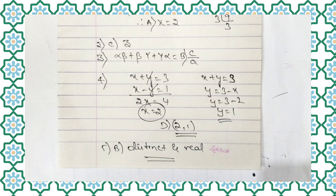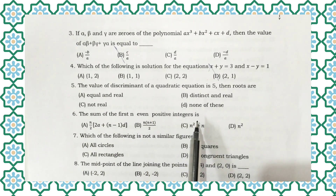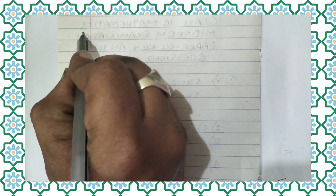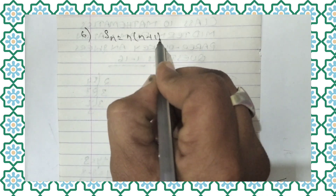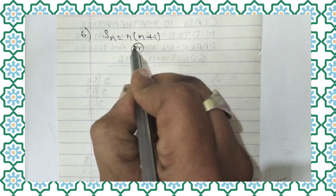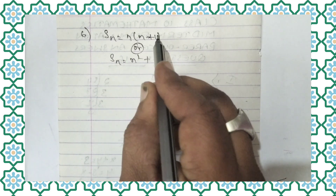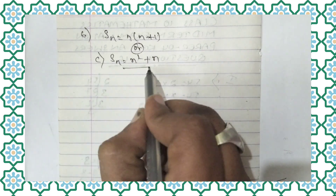Now let us move to question number 6. The sum of the first n even positive integers. The right option is C. Sn is equal to n into (n plus 1). Expanding, Sn equals n squared plus n. So option C is the right answer.